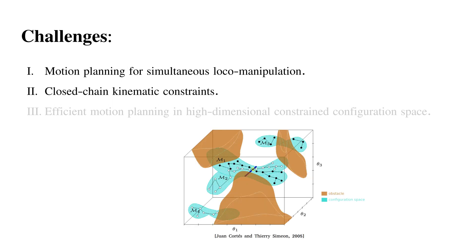Second, when multiple manipulators hold an object, closed-chain kinematic constraints are formed, which makes the motion planning problem challenging by inducing lower-dimensional singularities.